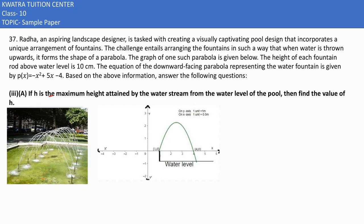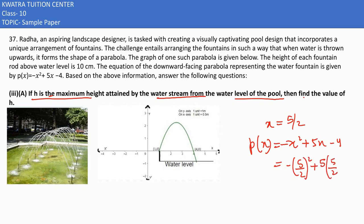Part 3A: If h is the maximum height attained by the water stream from the water level of the pool, find the value of h. Since x equals 5/2, I substitute into the polynomial minus x squared plus 5x minus 4. So it's minus (5/2)² plus 5(5/2) minus 4, which is -25/4 plus 25/2 minus 4. Taking the LCM of 4...